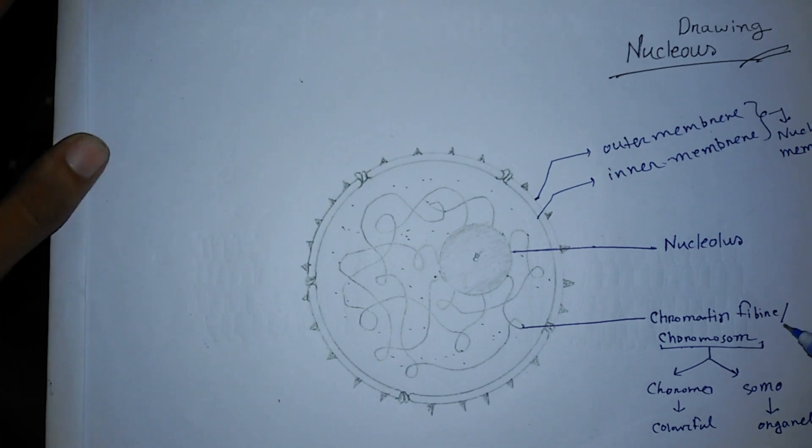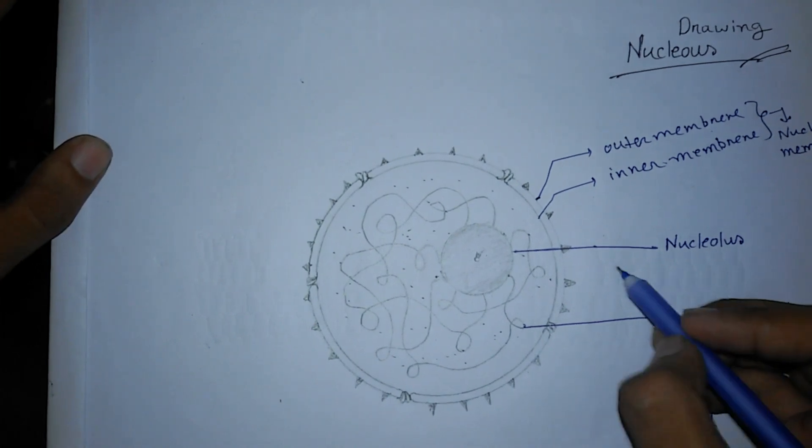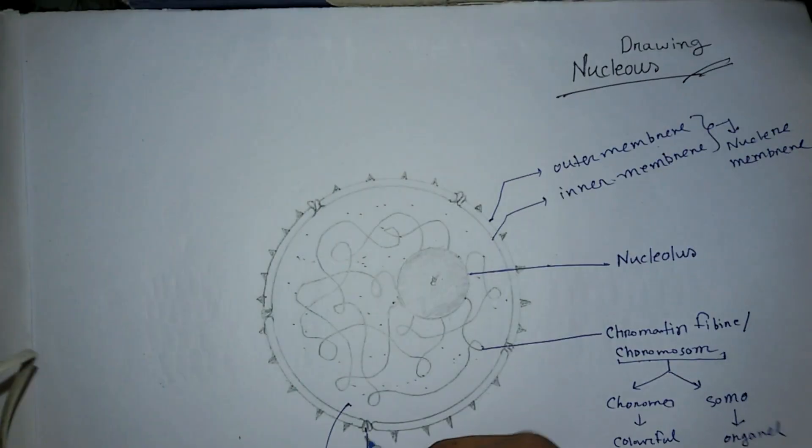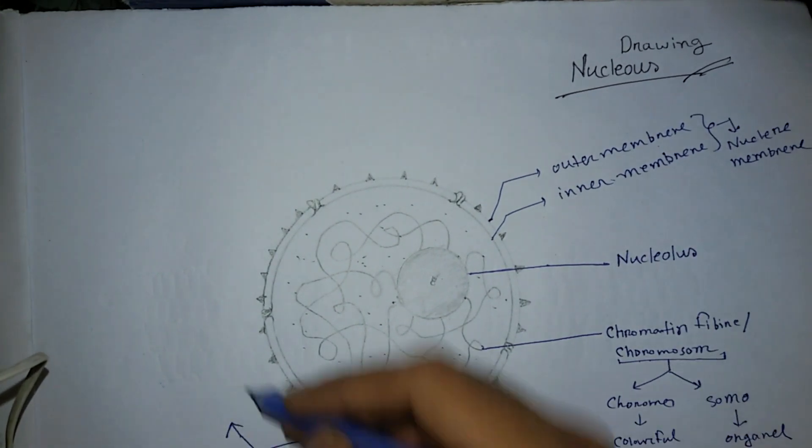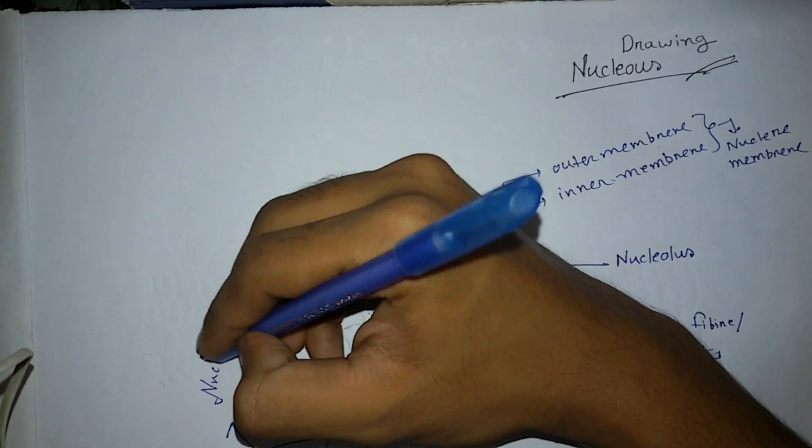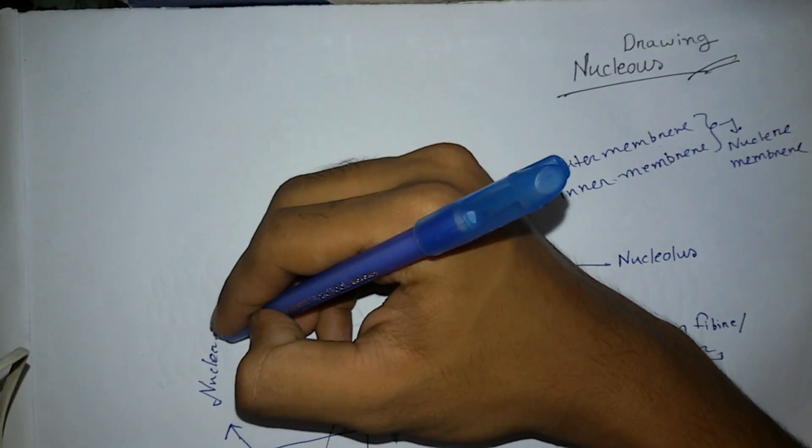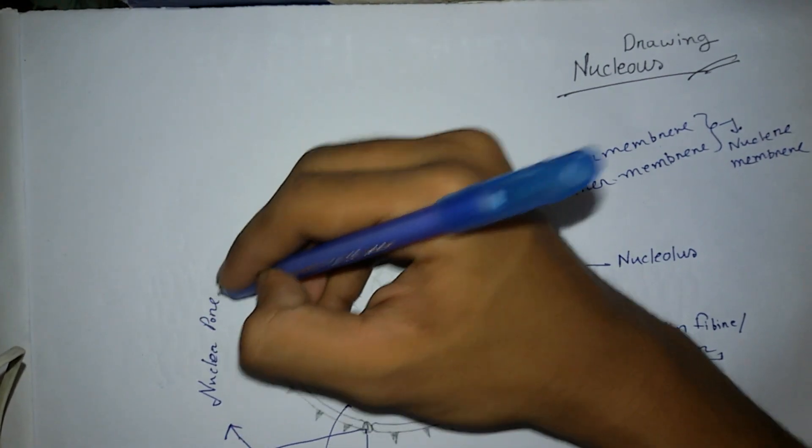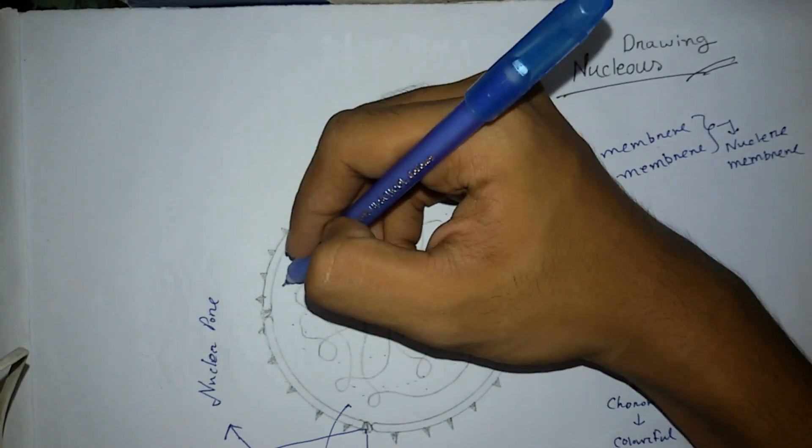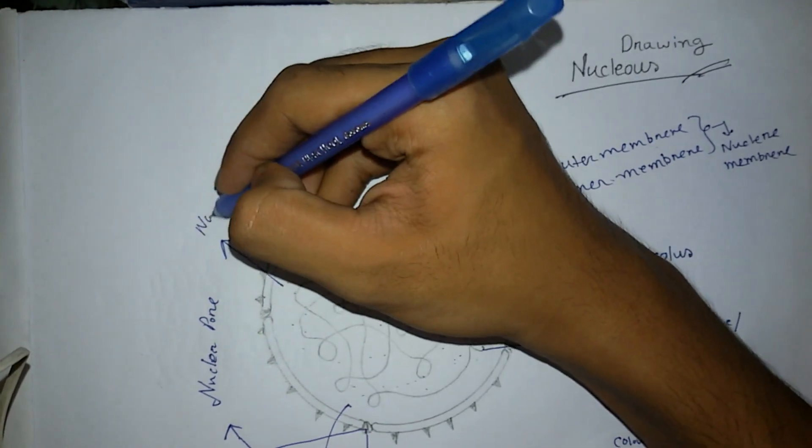Actually chromatin fiber. Then after that comes the nuclear pore here, and then comes the nucleoplasm here.